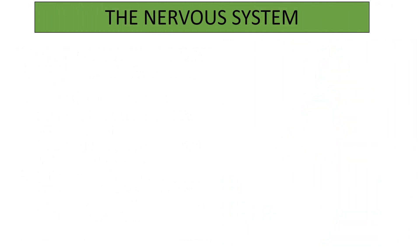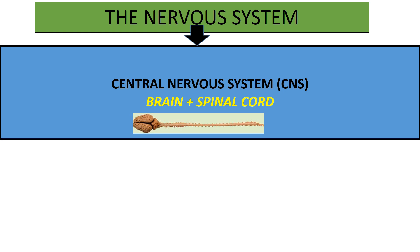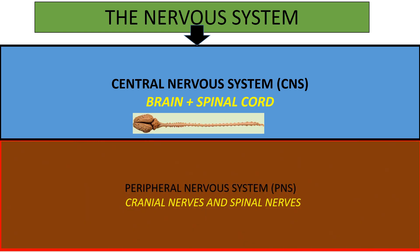On this slide, I will explain the conceptual organization of the nervous system. The nervous system is made up of the central nervous system and the peripheral nervous system.